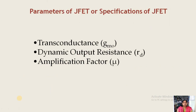A field effect transistor is a voltage controlled device — that is, the output current (drain current) depends on the input voltage (gate to source voltage VGS) as well as the drain to source voltage VDS. So drain current ID is a function of VGS and VDS. Based on this dependency, we have three parameters defined: Transconductance GM, Dynamic Output Resistance Rd, and Amplification Factor Mu.